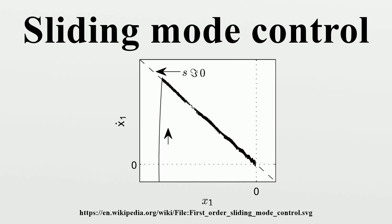The system chatters along the surface as it asymptotically approaches the origin, which is an asymptotically stable equilibrium of the system when confined to the sliding surface. Although the system is non-linear in general, the idealized behavior of the system in Figure 1 when confined to the surface is an LTI system with an exponentially stable origin. Intuitively, sliding mode control uses practically infinite gain to force the trajectories of a dynamic system to slide along the restricted sliding mode subspace. Trajectories from this reduced-order sliding mode have desirable properties.